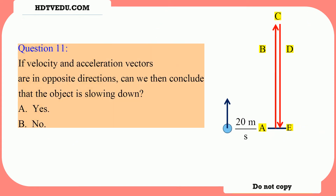Question number 11: If velocity and acceleration vectors are in opposite directions, can we then conclude that the object is slowing down? Yes or no?